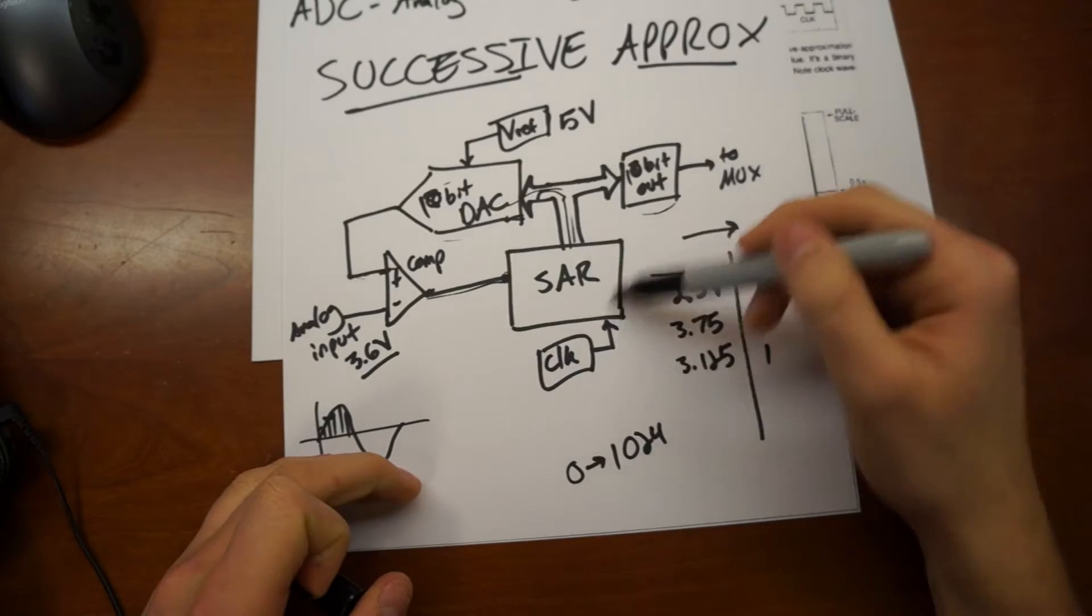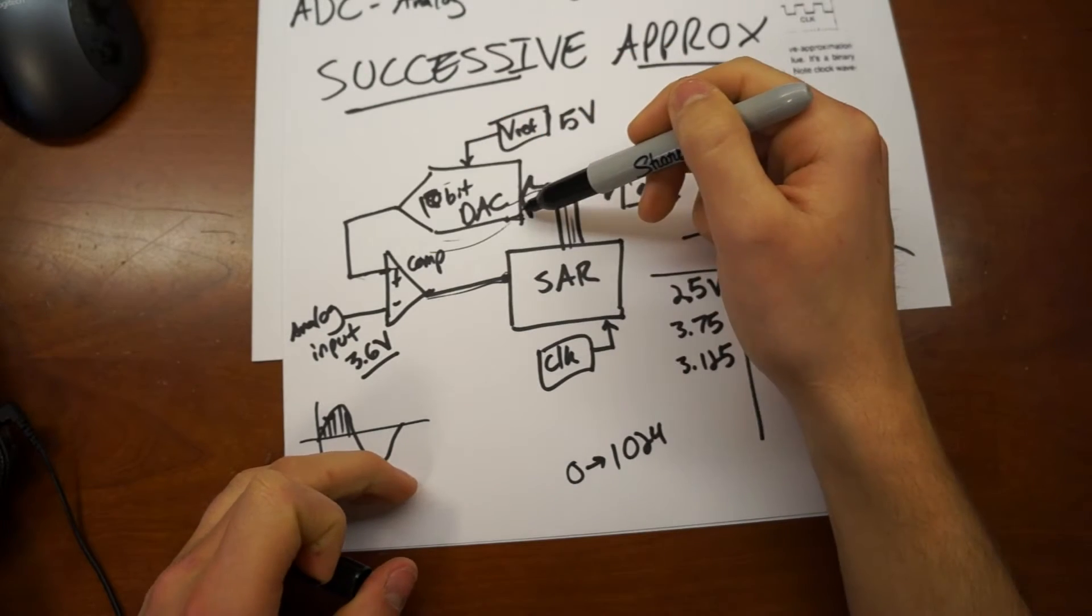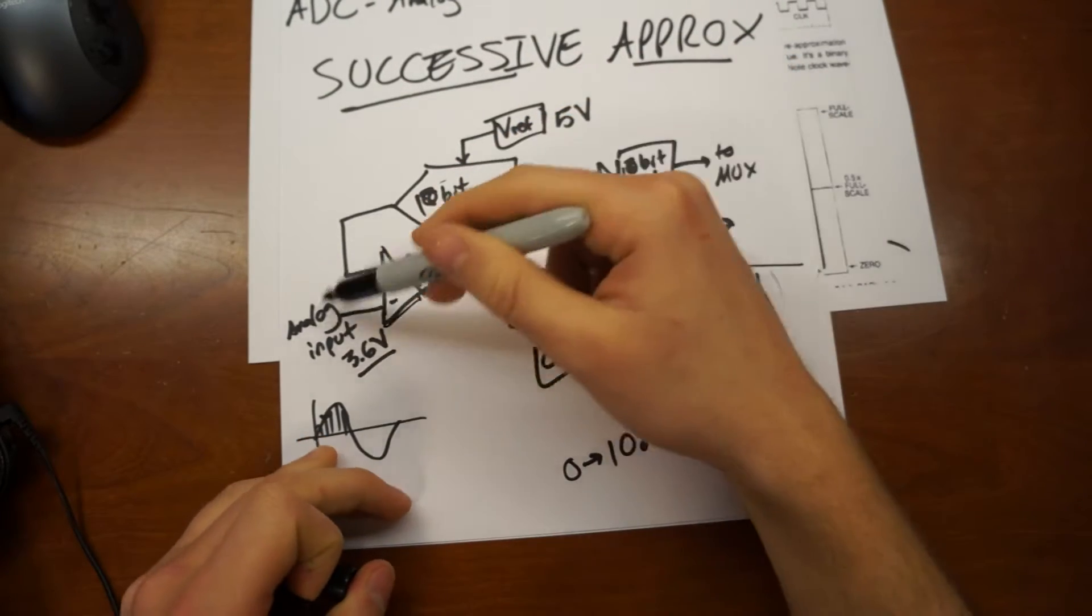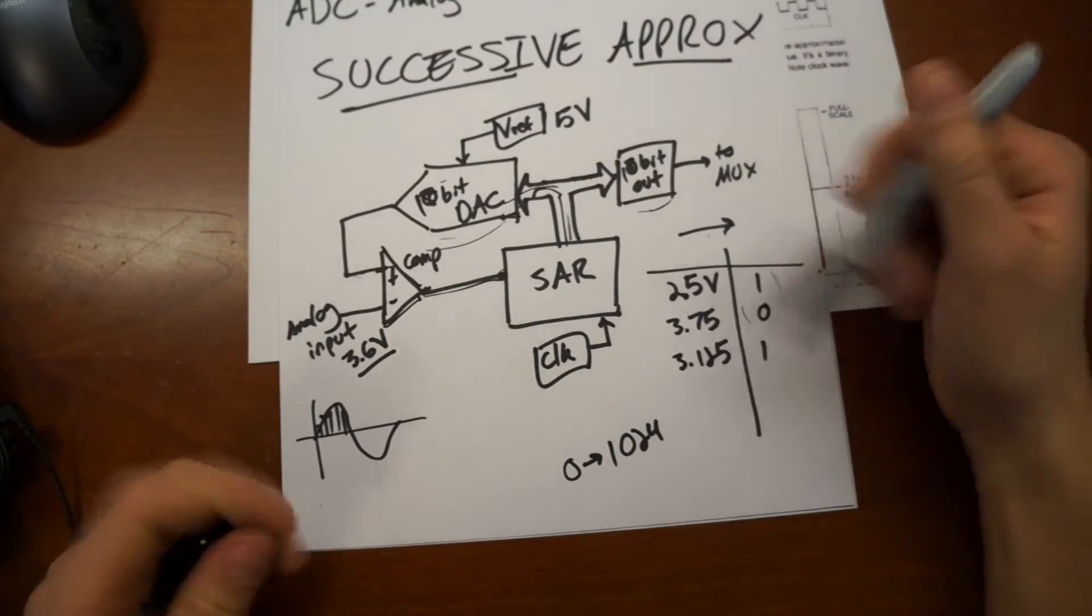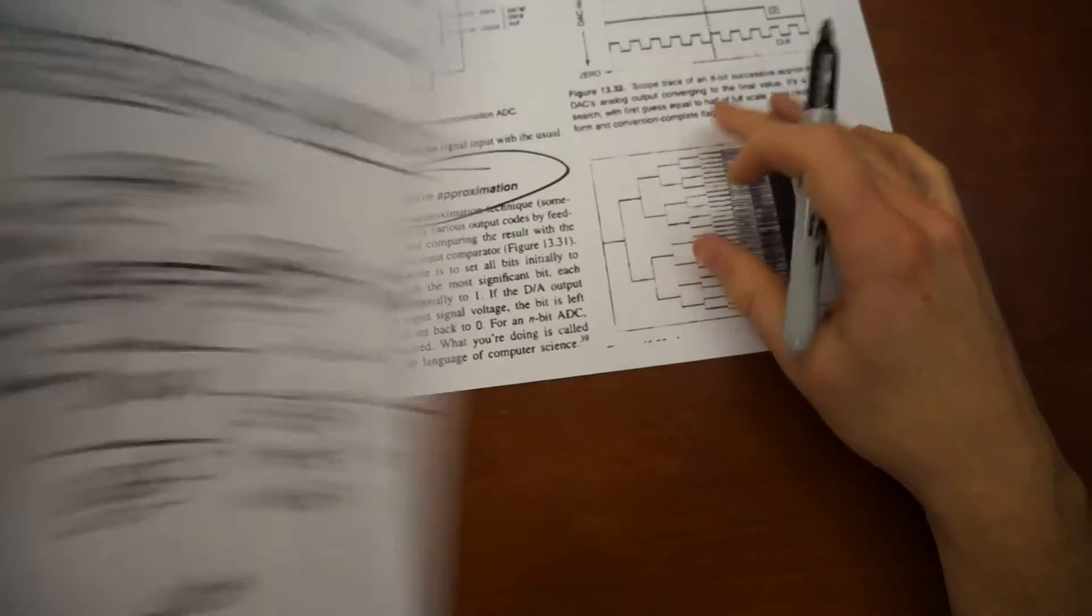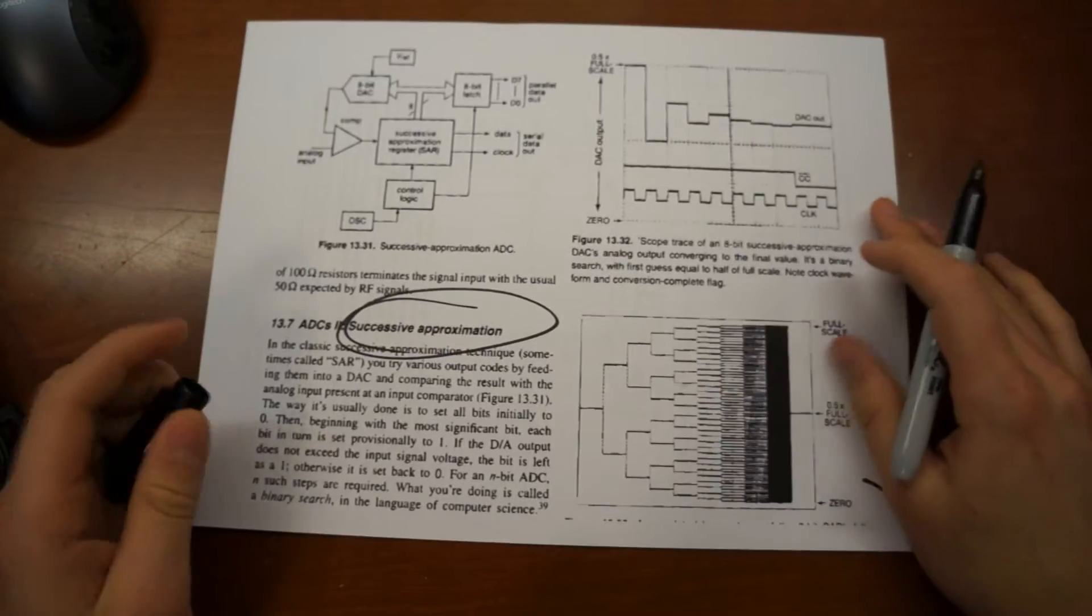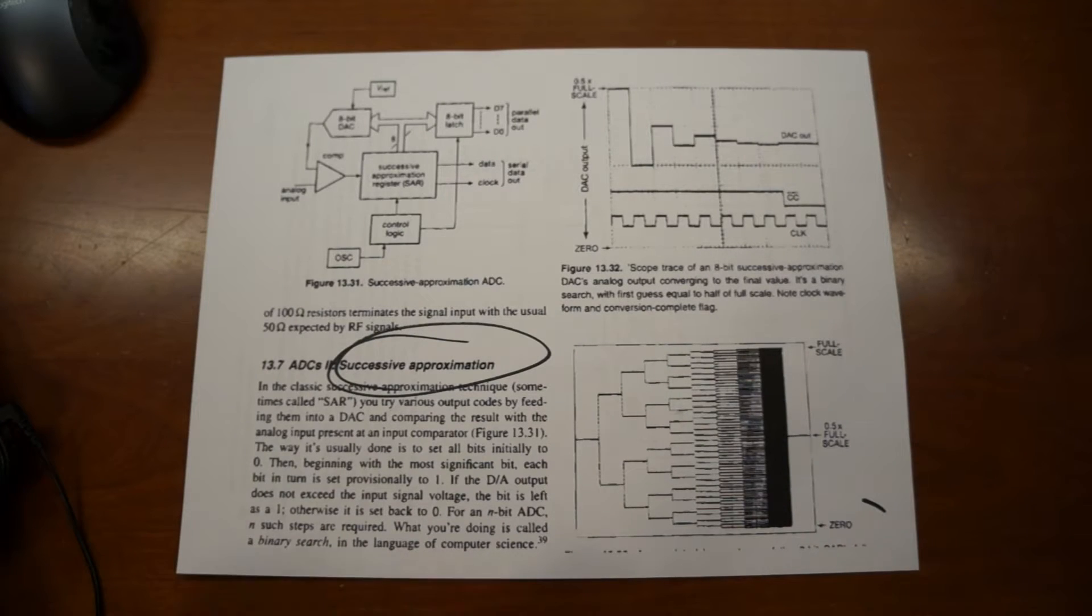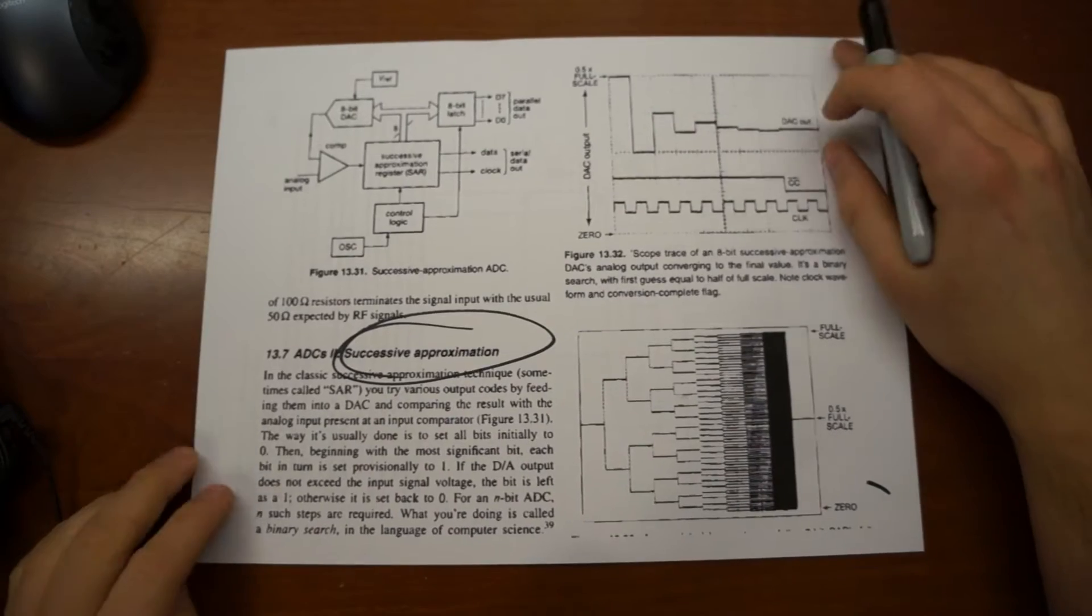Where the signal approximation register talks to a DAC and just uses a comparator on your analog input to hone in on the value that you're looking for. And so here, I actually, here's a nice print-off from the guys that write Art of Electronics.